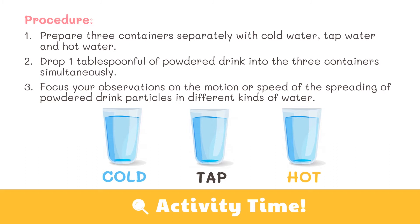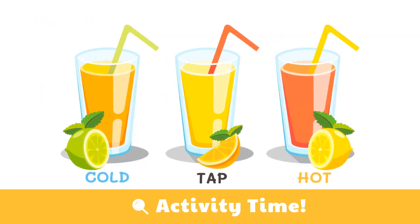Carefully observe and compare the behavior of the powder drink in the three containers. Focus your observations on the motion or speed of the spreading powder drink particles in three containers of water with different temperatures. You may have noticed that the powder drink scattered and dissolved fastest in hot water, then in tap water, and lastly in cold water.